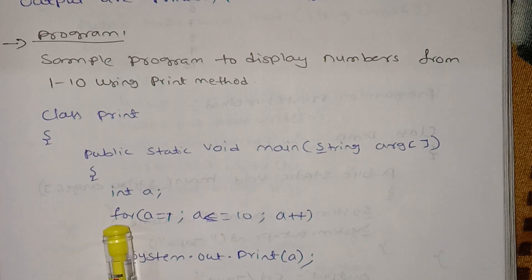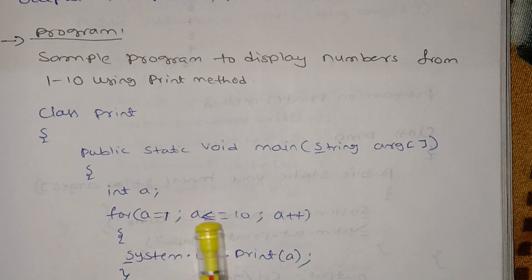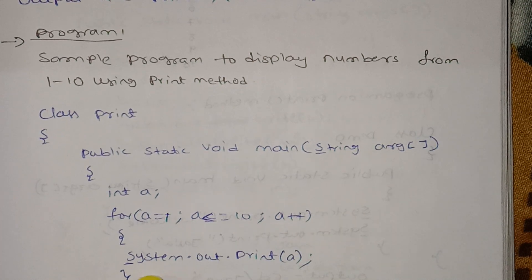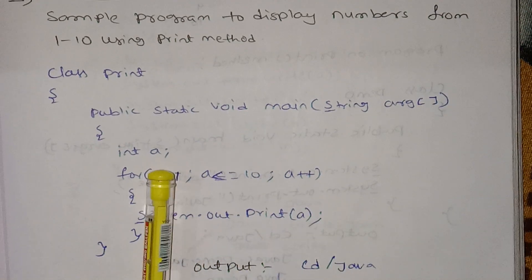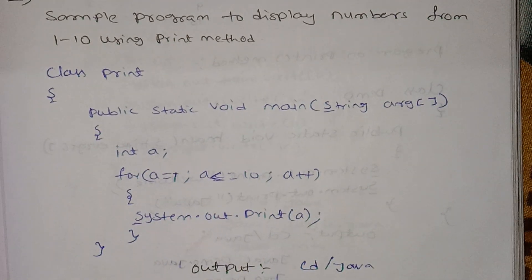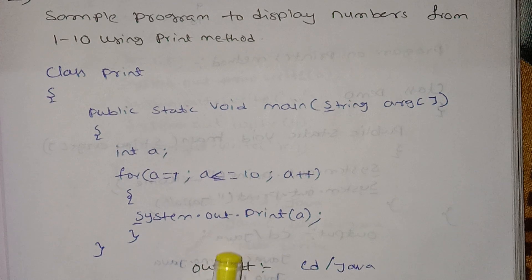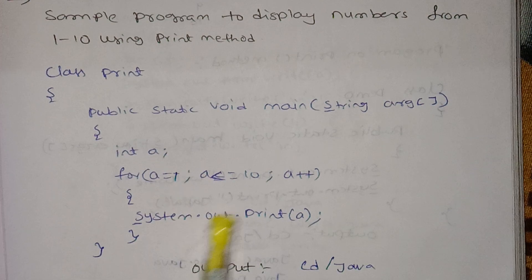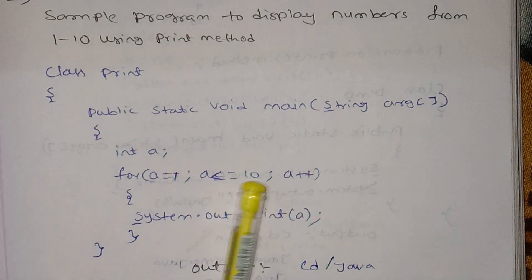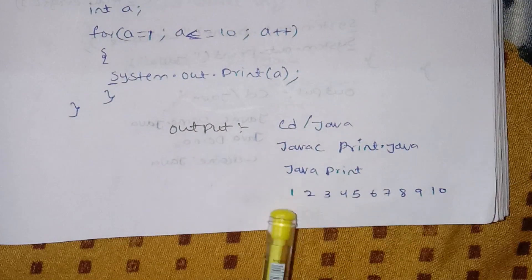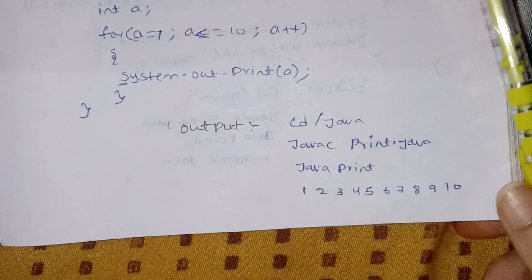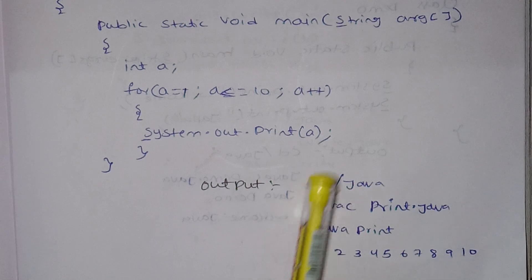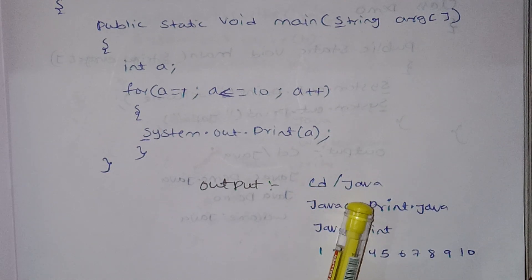We initialize int a equal to 1. The loop condition is a less than or equal to 10. When a is 1, it is less than or equal to 10, so we enter the loop.